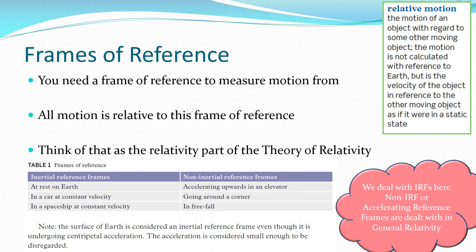So you need a frame of reference to measure motion from or motion is relative to that frame of reference. It doesn't matter whether the frame of reference you pick is the ground and you watch the train moving past or your frame of reference is inside that train carriage watching the ground moving past you. It is relative to where you are picking your frame of reference. That's the relativity part. Note my point there in the pink cloud: we deal with inertial reference frames here. Non-inertial reference frames or accelerating reference frames come in in general relativity as I said before. And we've got some nice examples here on the slide about inertial reference frames. Obviously the earth is not really at rest, it is rotating around its axis, it is rotating around the sun, the sun is rotating around the milky way, the milky way is moving within the universe, but we consider that to be at rest.